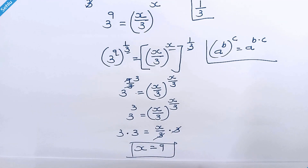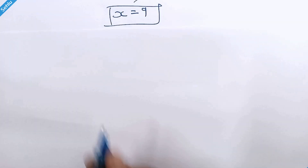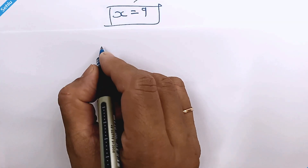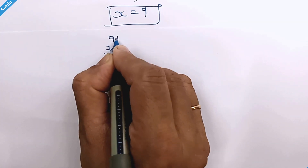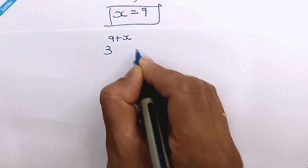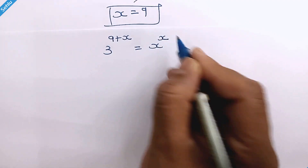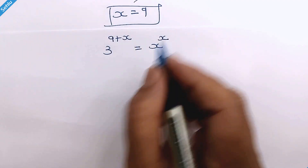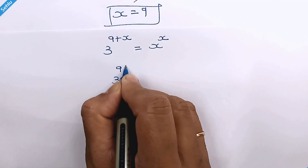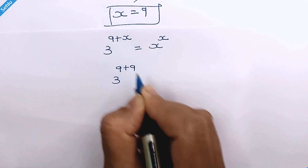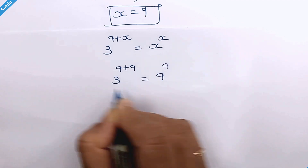Now let's verify our answer. Our given equation is 3 raised to 9 plus x is equal to x raised to x. Putting x equal to 9, we get 3 raised to 9 plus 9 is equal to 9 raised to 9.